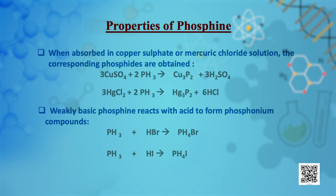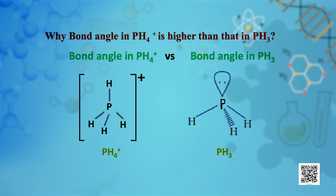Phosphine is weakly basic and, like ammonia, gives phosphonium compounds when reacted with acids. Have you ever thought why the bond angle in phosphonium ion (PH4+) is higher than that in phosphine? As you can see in the figure, there is lone pair–bond pair repulsion in phosphine, which is absent in phosphonium ion. This lone pair–bond pair repulsion brings PH bonds closer and decreases the PH bond angle.